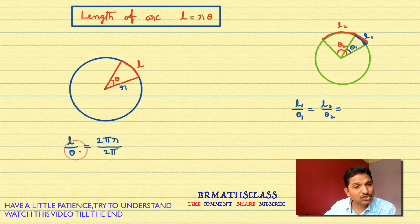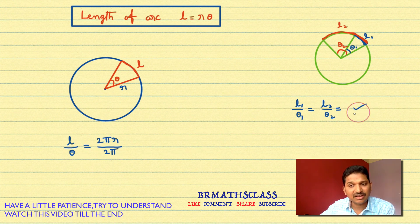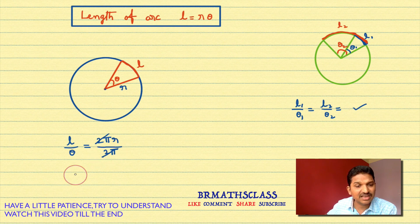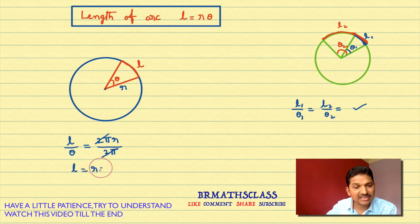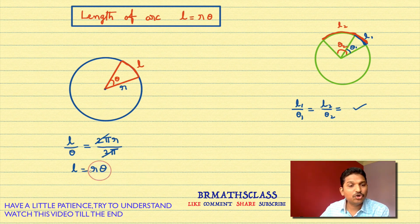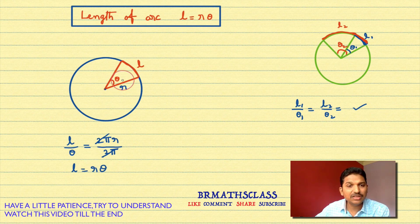These two are definitely proportional. So the 2 pi gets canceled and you get L equal to r theta. Therefore, the length of an arc L equals r theta, where theta is the angle in radian measure. I hope you understand this.